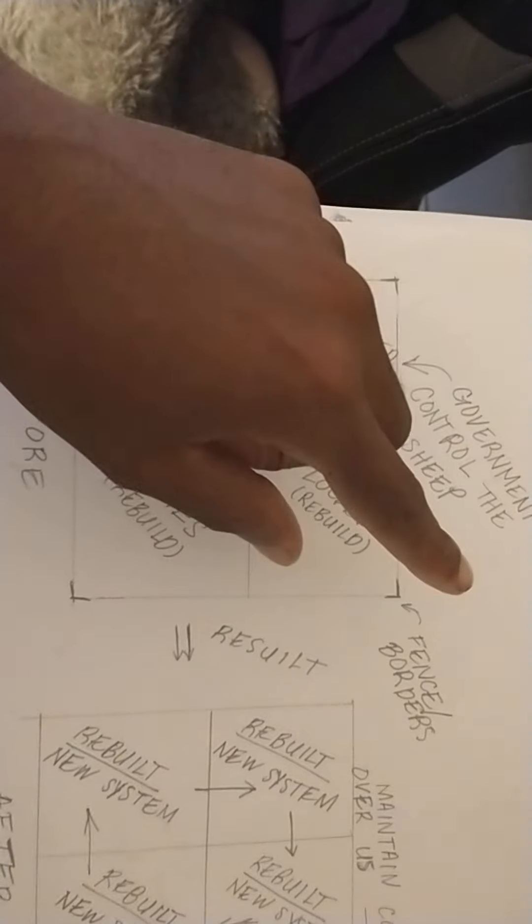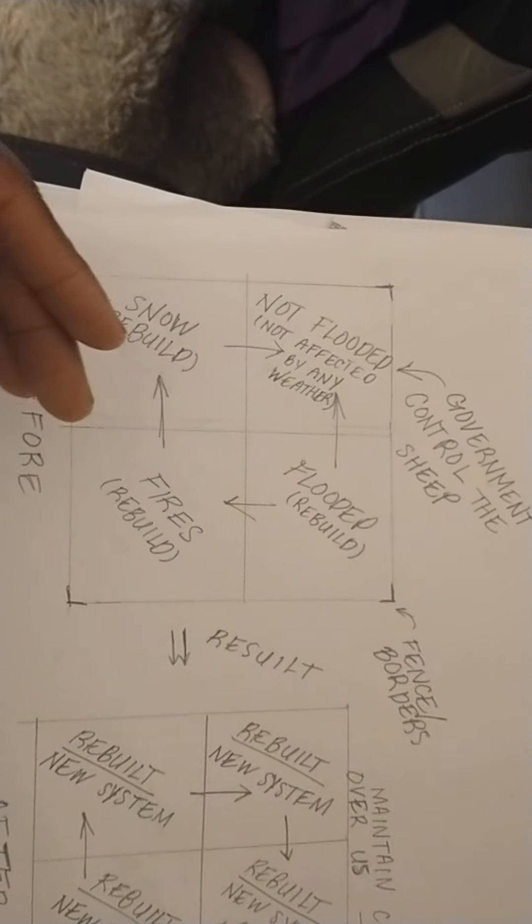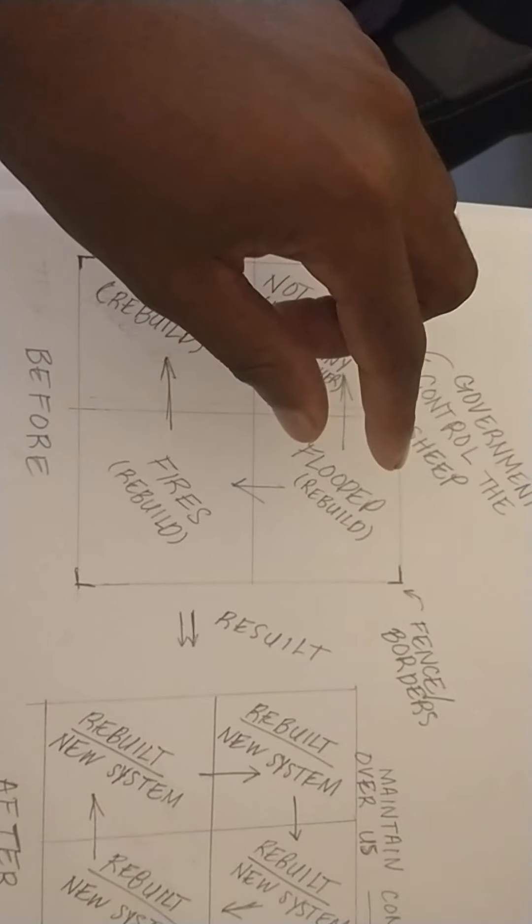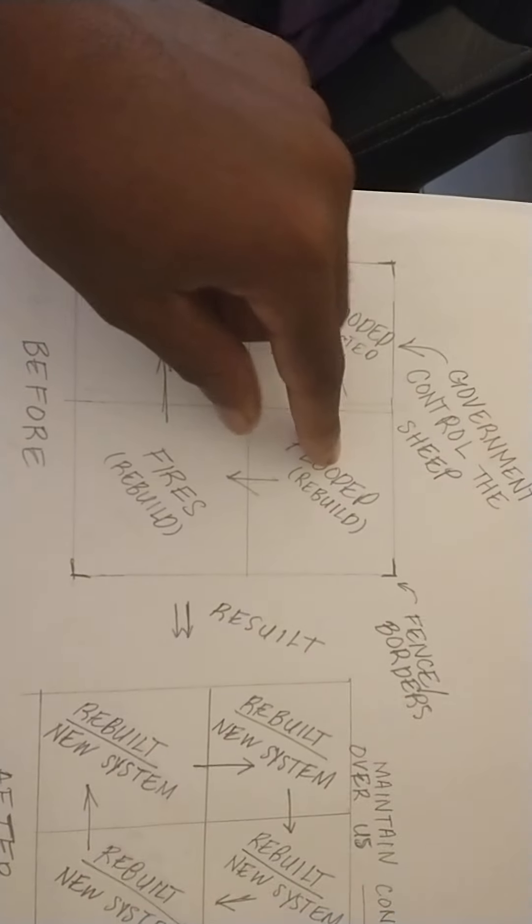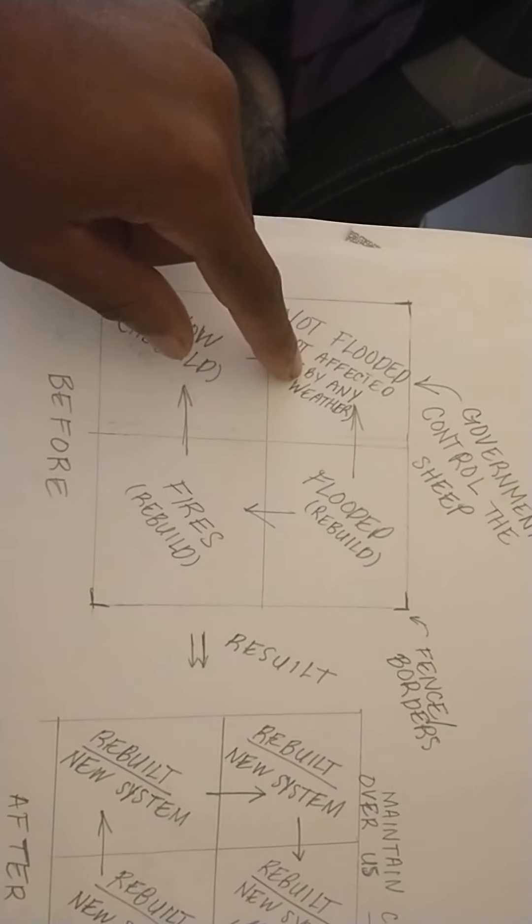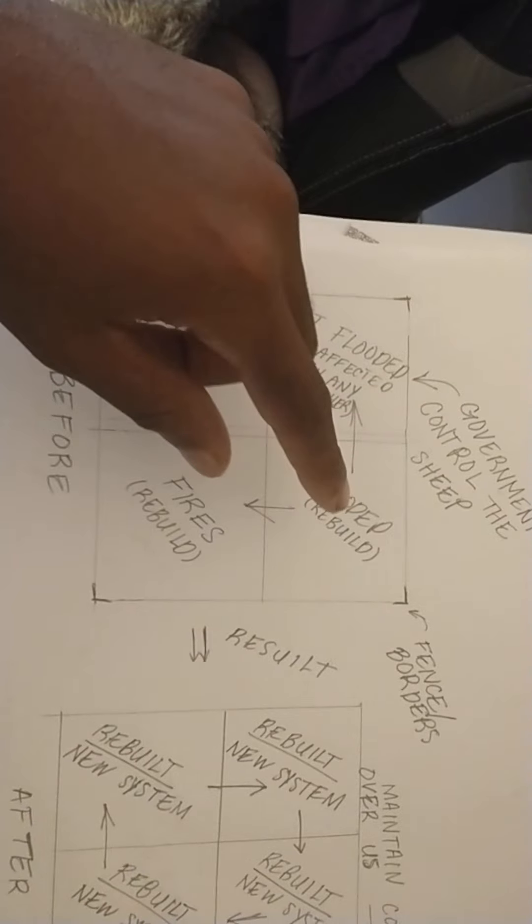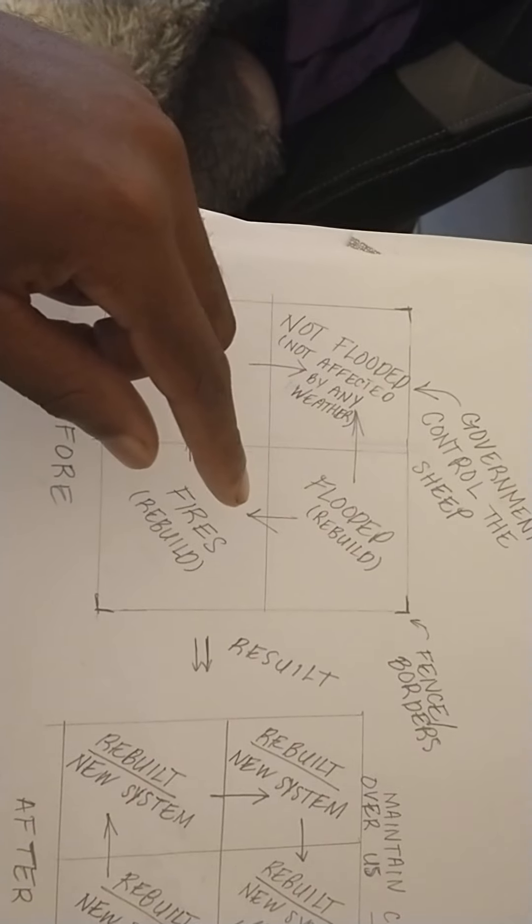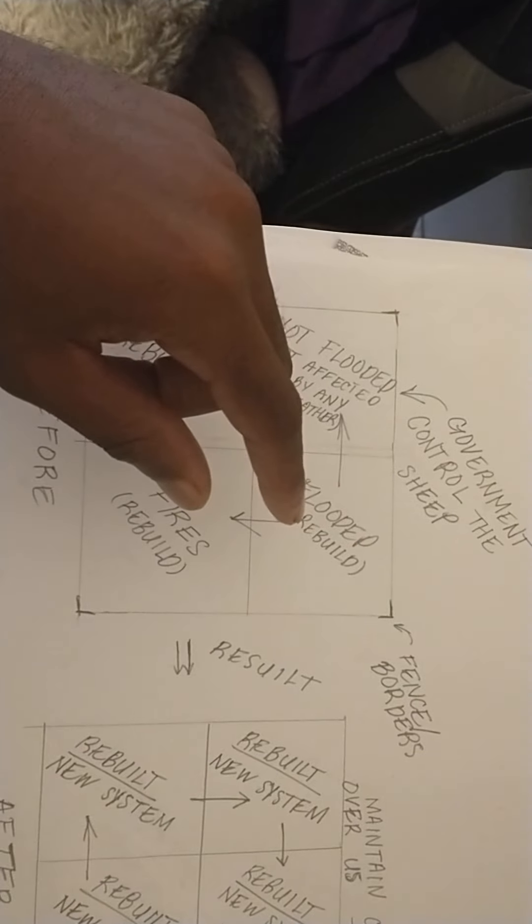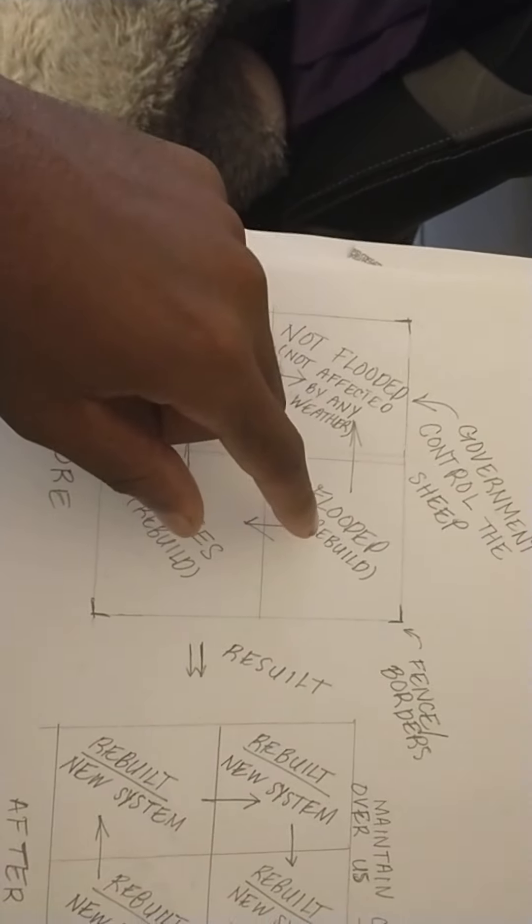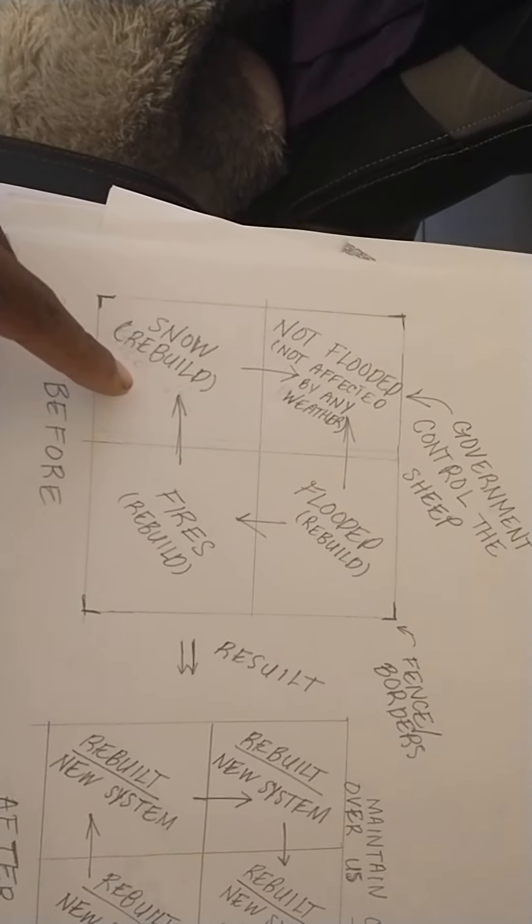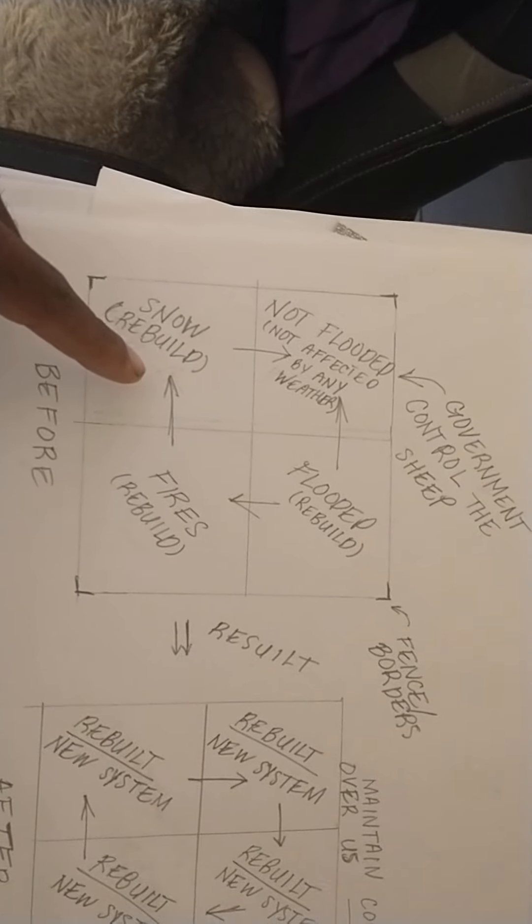And while these events are taking place whether they're natural or unnatural, this is how the government moves the sheep. You got sheep here in the flooded areas, they gonna move here, then they gonna move here, then they gonna move to here. And while all these events are taking place, these beings are just gonna use our crazy asses to rebuild these areas that are being affected by these said disasters.